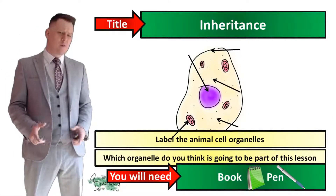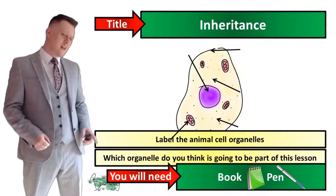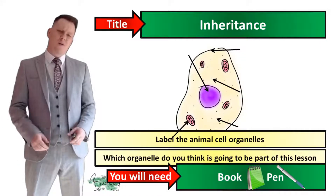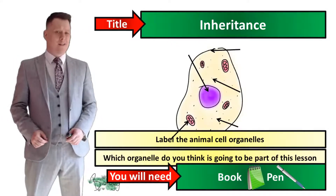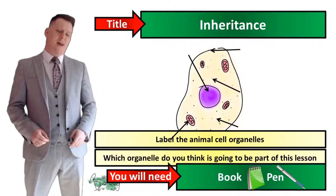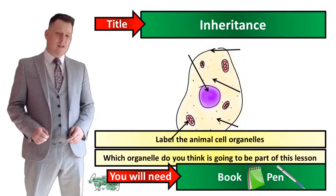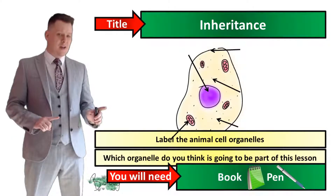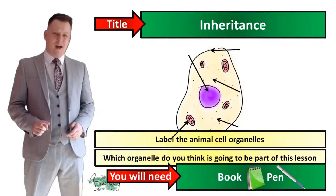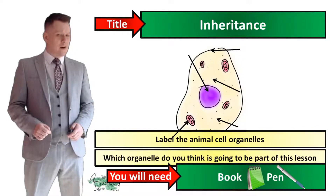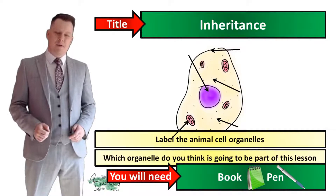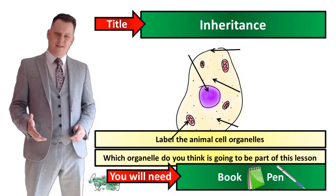Hello and welcome to another one of Mr Deep's science lessons. For today's session you're going to need a book and a pen, and in your books I'd like to get down today's title which is Inheritance. For your starter activity, I would like you to sketch an animal cell, label its organelles, and predict which organelle is going to be a big part of this lesson.